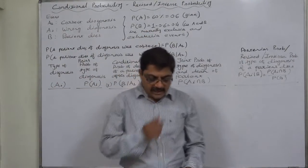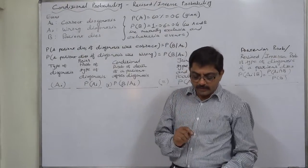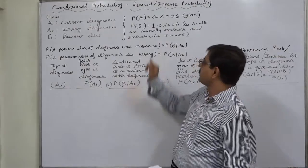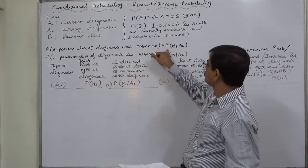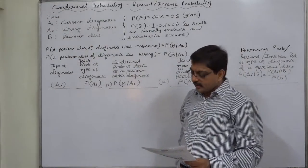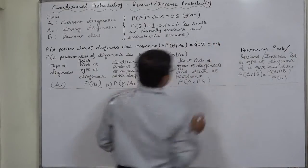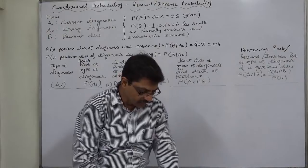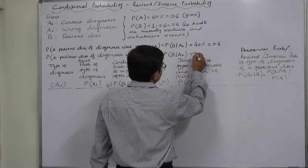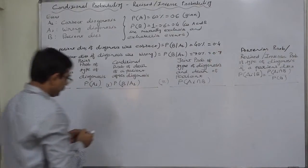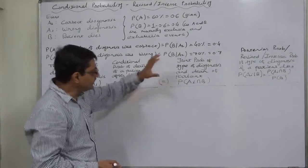The probability that a patient will die after correct diagnosis is 40 percent. We denote this as P(B given A1) = 0.40. The probability of death by wrong diagnosis is 70 percent — P(B given A2) = 0.7. These are conditional probabilities calculated from experience: the probability a patient dies if diagnosis was correct, and the probability a patient dies if diagnosis was wrong.